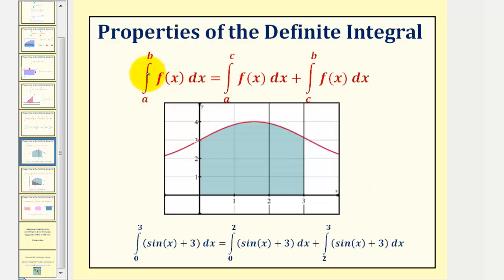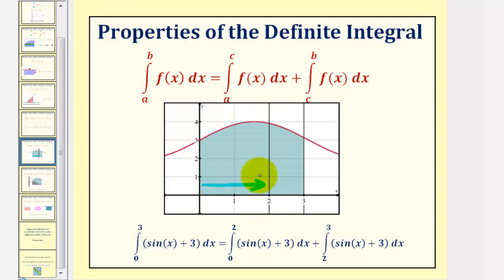Next, we have the integral of f of x from a to b equals the integral of f of x from a to c, plus the integral of f of x from c to b. To help visualize this, if we integrate sine x plus three from zero to three, the function is non-negative over this closed interval, and the shaded region is the value of the definite integral. We can write this as two separate integrals by choosing c equals two: integrating from zero to two plus integrating from two to three gives the same result as integrating from zero to three. This property holds even if c is not in the closed interval from a to b.